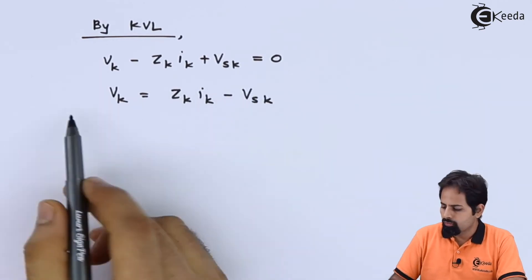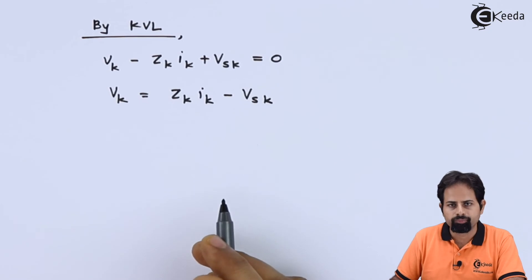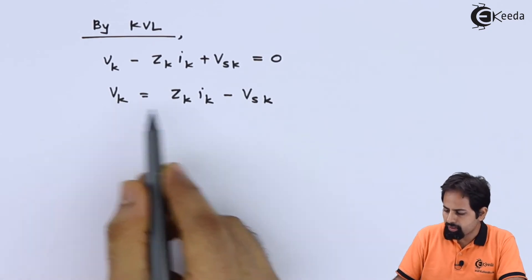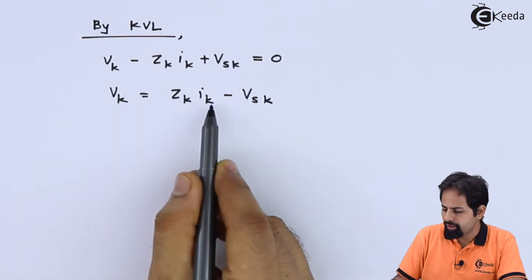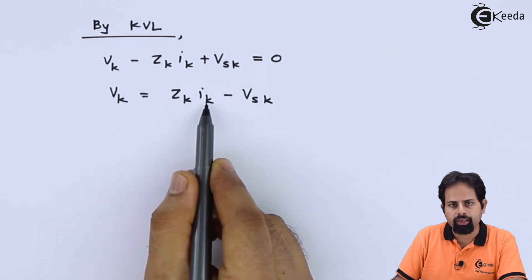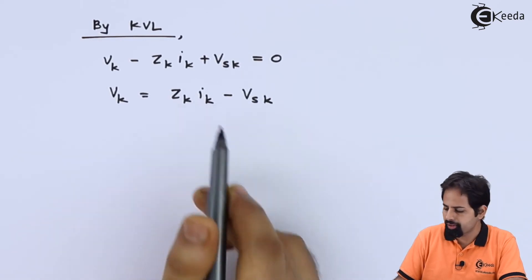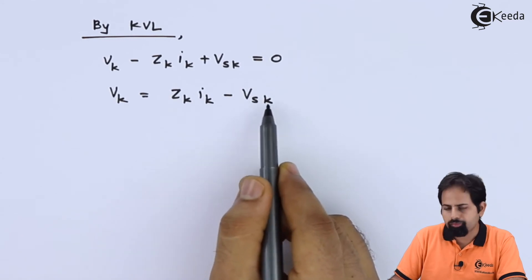Now what we will do, we will write all this in matrix form. So this will become VB, this will become ZB, this will become IB, capital IB, the matrix of branch current, and this will become VS.